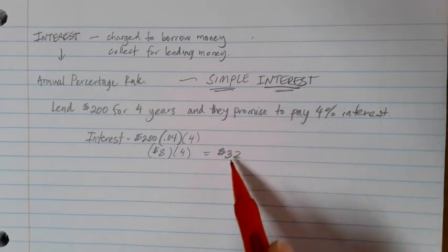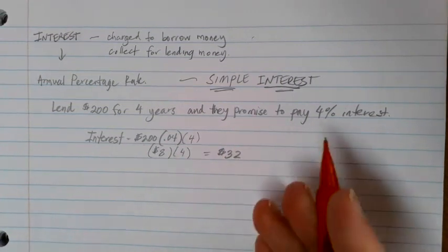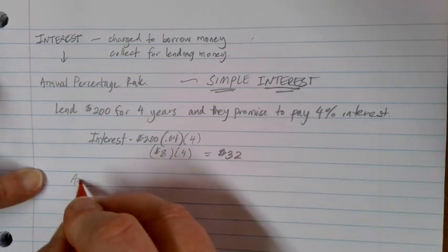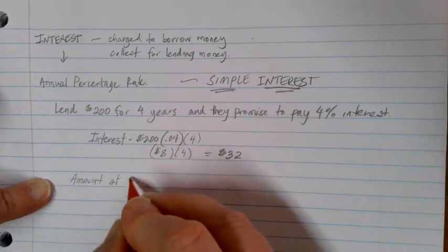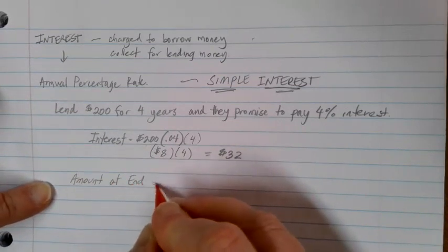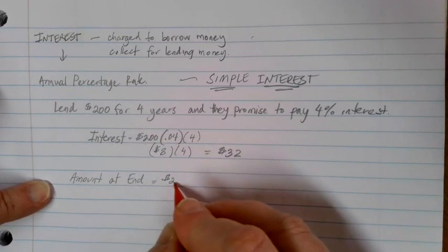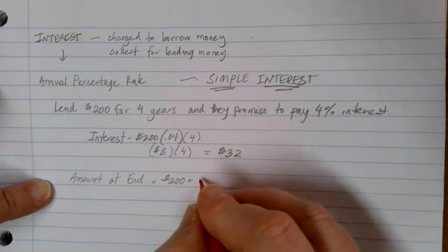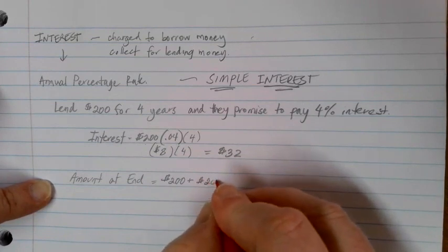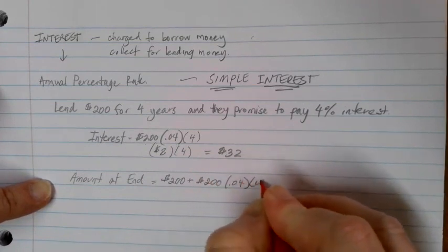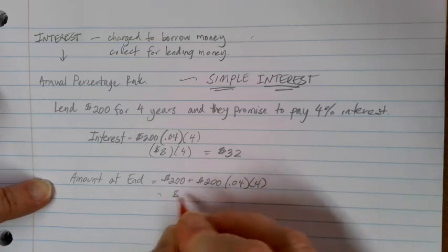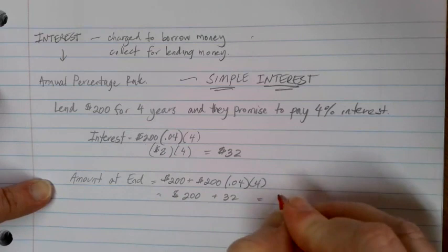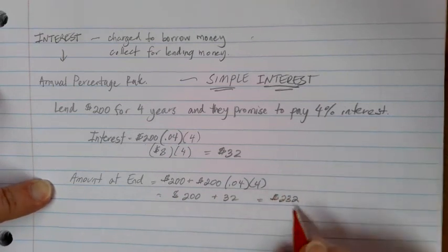Now, if you want to think about how much you're going to get back, the amount that you end up with, the amount at the end, is going to be that initial $200 because they have to pay that back plus the interest. Or $200 plus $32. At the end, you would get $232 back.